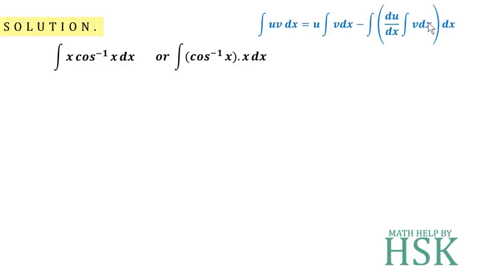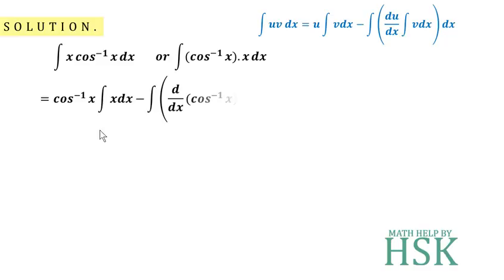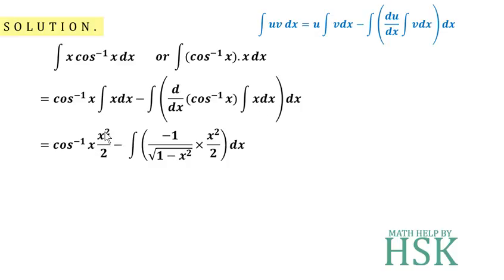Using the integration by parts formula, we get: cos⁻¹(x) times the integration of x, minus the differentiation of cos⁻¹(x) times the integration of x, all integrated. The integration of x is x²/2, and the differentiation of cos⁻¹(x) is −1/√(1 − x²). So we get cos⁻¹(x) · x²/2, minus the integral of the bracket.